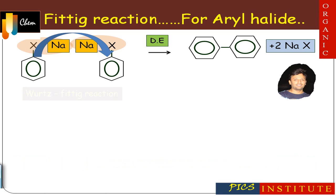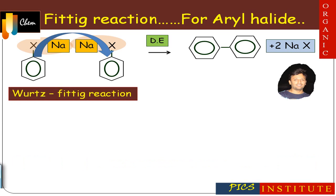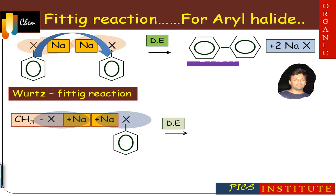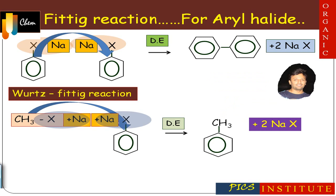The next reaction is the Wurtz-Fittig reaction. As the name suggests, it is a combination of the Wurtz and Fittig reactions, hence involving the reaction between one molecule of alkyl halide and another molecule of aryl halide in the presence of sodium in dry ether. Splitting of bonds occurs and the alkyl part and aryl part combine together to form an aromatic hydrocarbon, also called toluene.